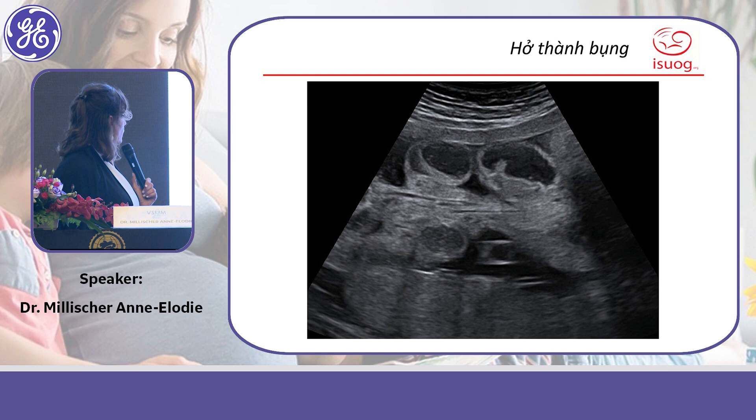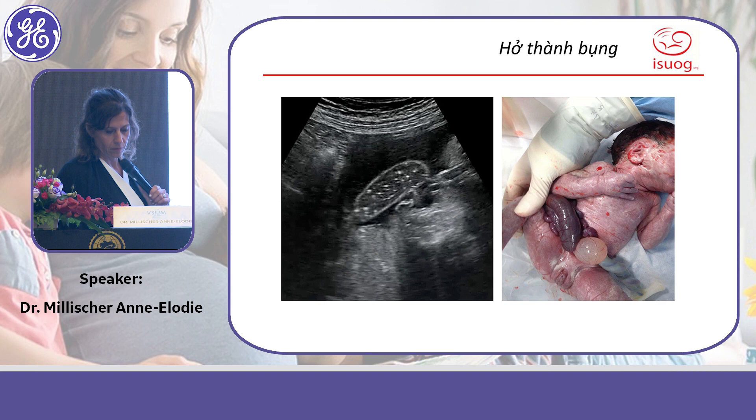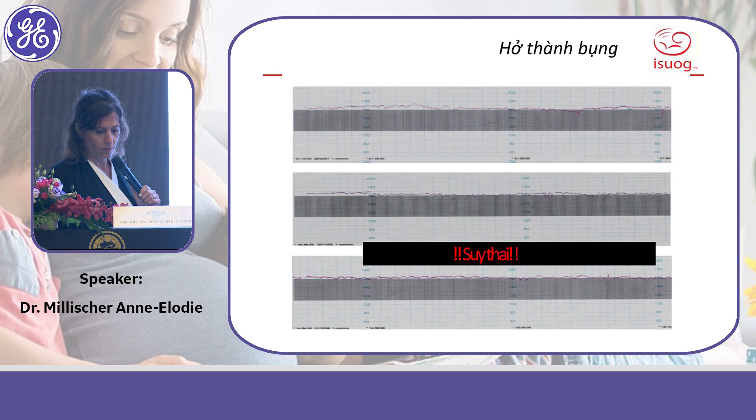The main prognostic index is the dilatation of bowel loops remaining inside the abdomen. You may see dilated loops floating in amniotic fluid, but critically you must assess the intra-abdominal bowel — if those are markedly dilated, this is a warning sign that there may be an associated bowel atresia.